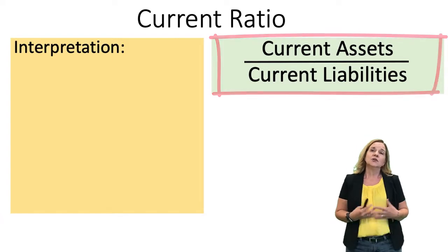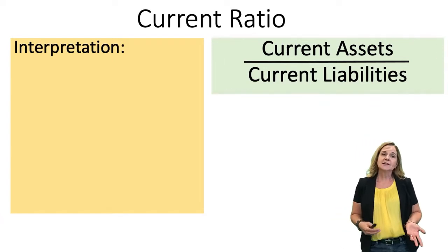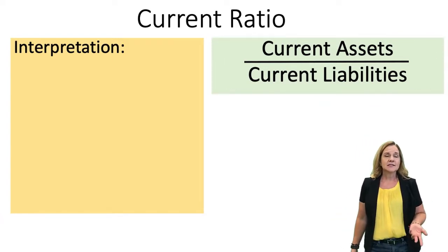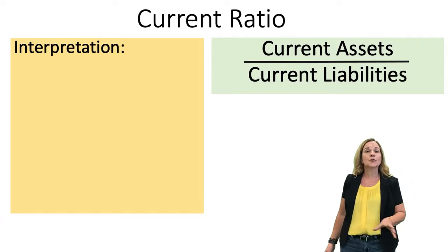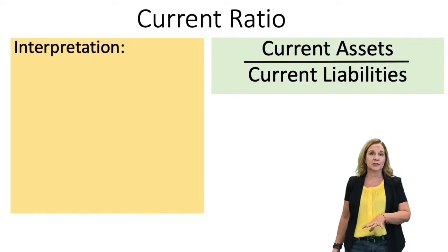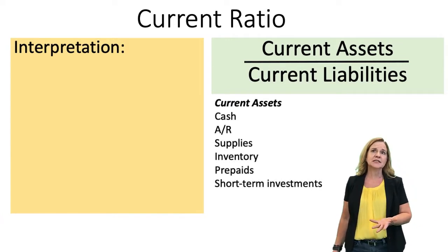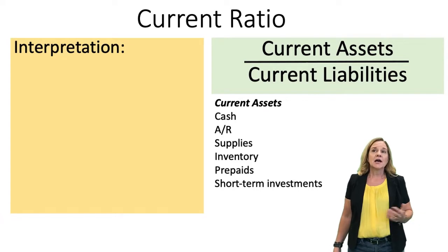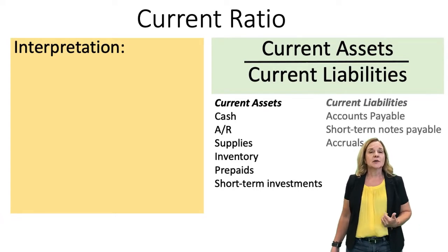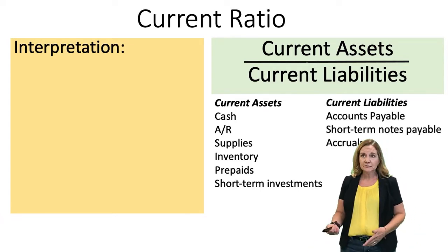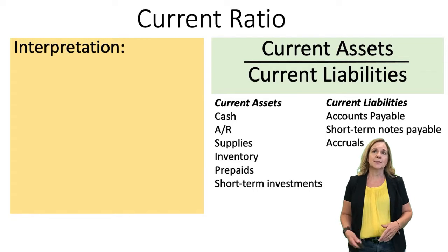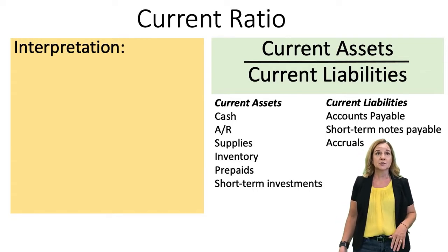As a reminder, current assets are assets that are expected to be converted to cash within one year or used within one year. Some examples are listed on the slides. Current liabilities are liabilities that we expect to pay within one year, and some examples of current liabilities are listed on the slide as well.